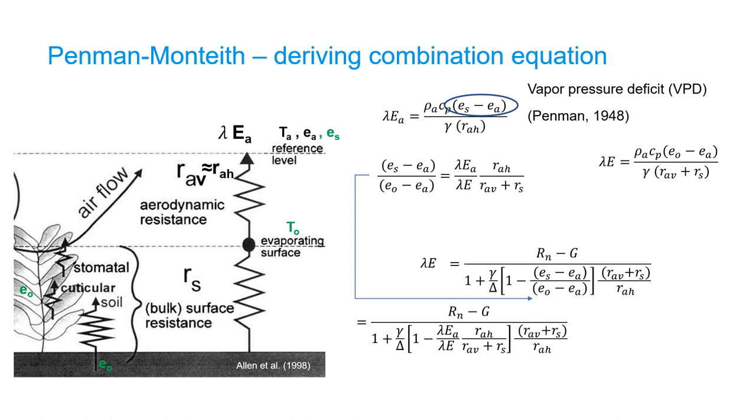we can rearrange the combination equation as follows. By replacing the temporary term lambda E-a, we obtain the Penman-Monteith equation in its common form, which contains the vapor pressure deficit term.